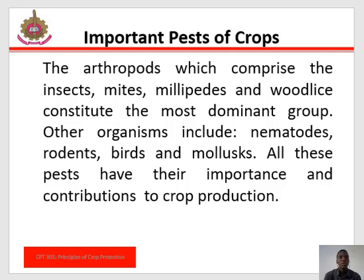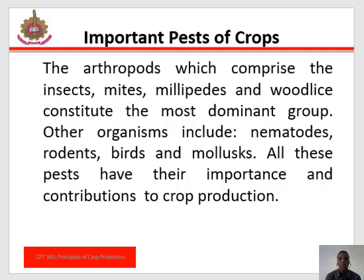Nematodes are small organisms which are normally referred to as eelworms. Nematodes can cause considerable damage to crops such as yam, cowpea, and many vegetables. A disease known as root-knot disease of cowpea, for example, causes the formation of irregular nodules on the roots and dwarfing of the mature plants, and is caused by nematodes.